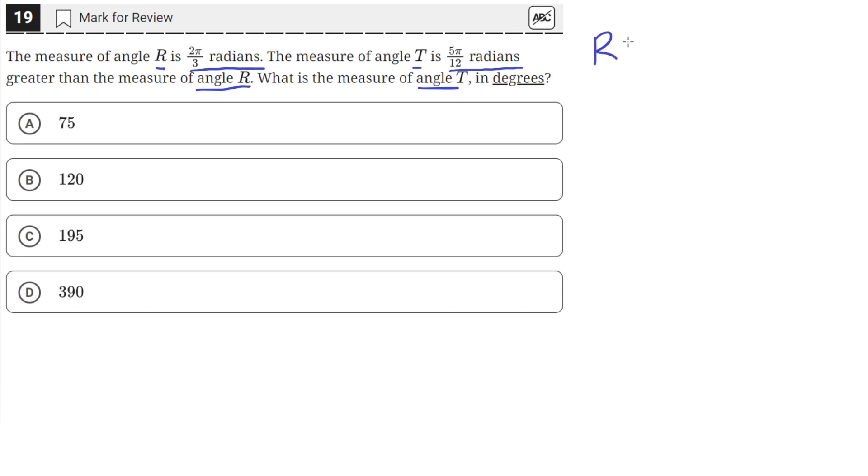So we have angle R that is 2π/3 radians, and angle T is 5π/12 radians greater than R.